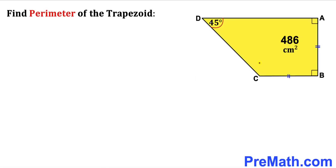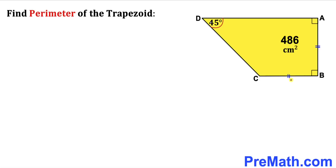Welcome to pre-math. In this video we have this trapezoid ABCD such that the area of this trapezoid is 486 centimeter square. Angle ADC is 45 degrees, and side length AB equals side length BC. We are going to calculate the perimeter of this trapezoid ABCD.